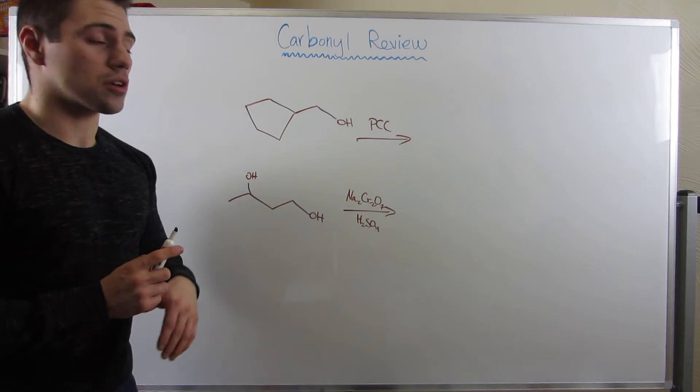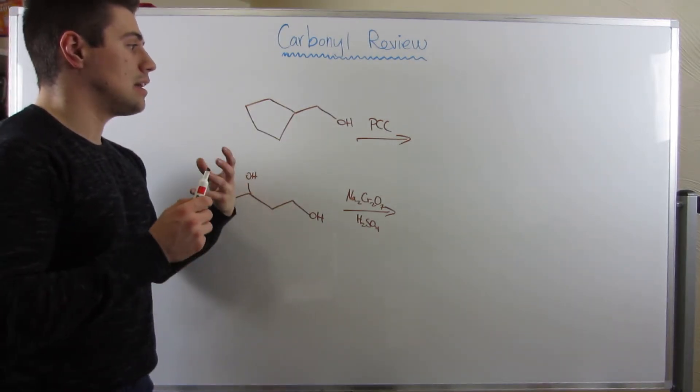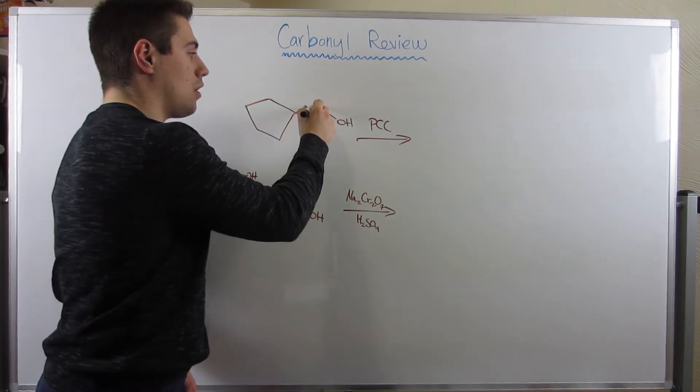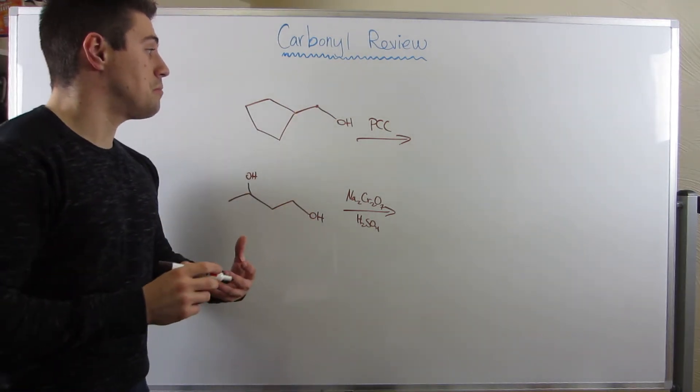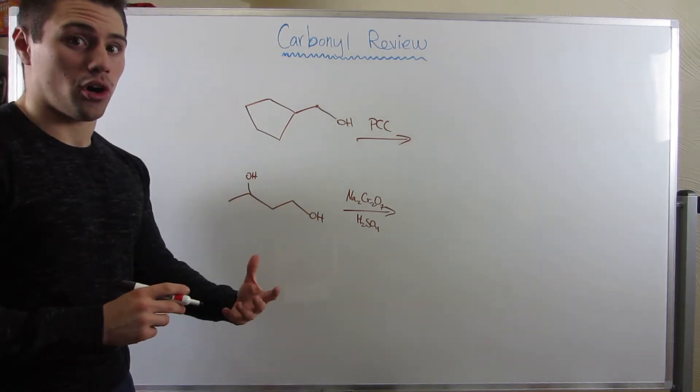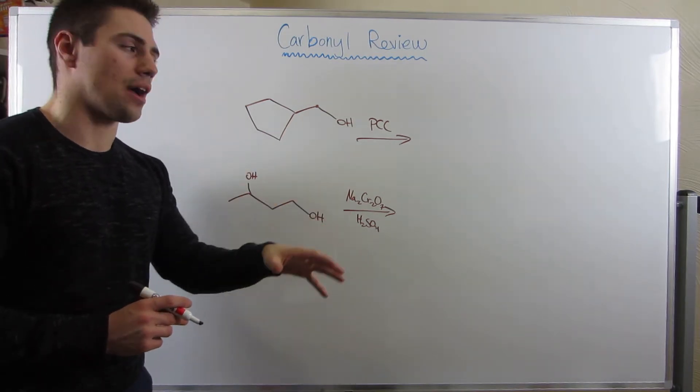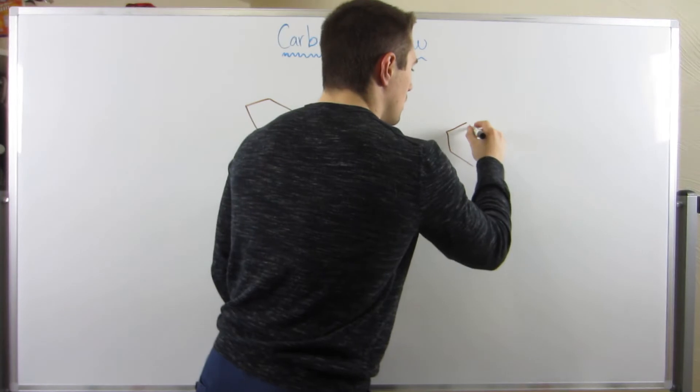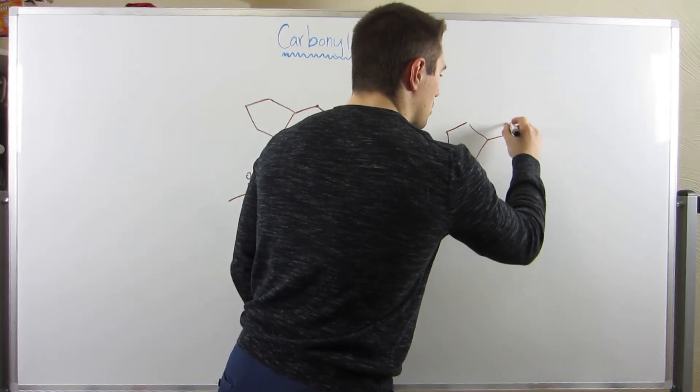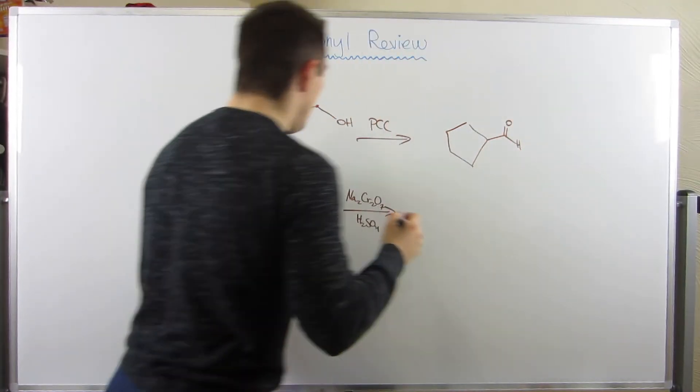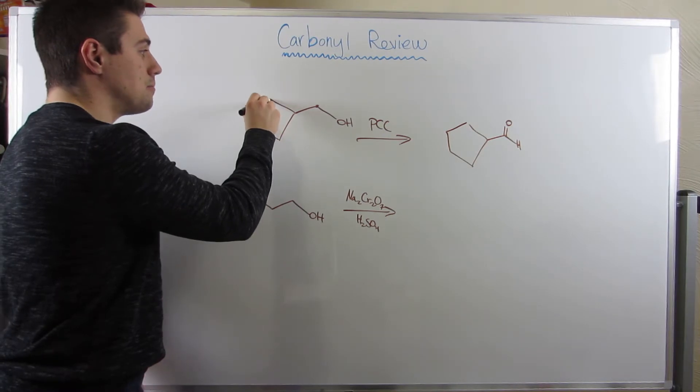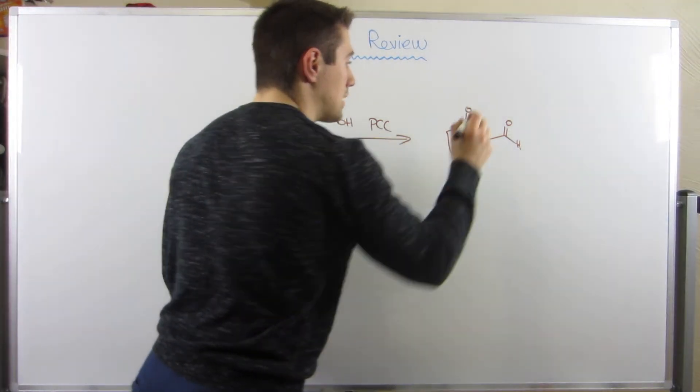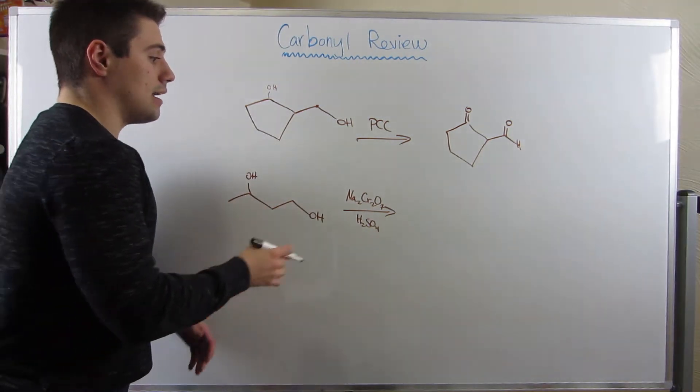So remember what PCC does. We're talking about oxidizing alcohols, right? PCC would oxidize alcohol to either a ketone or if it's a terminal alcohol, remember, it stops at the aldehyde. Right here, we have a terminal alcohol. So I would say this alcohol would turn into an aldehyde. If we had an alcohol, say, right here, the PCC would just oxidize it to a ketone, right? Nothing crazy there.